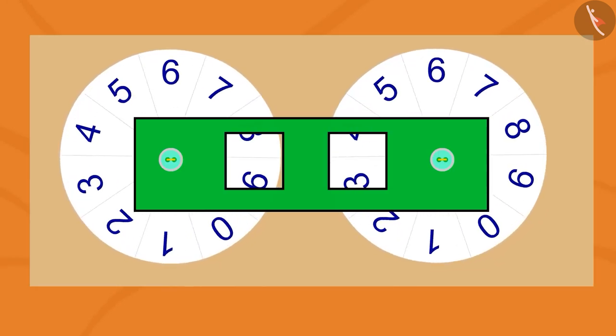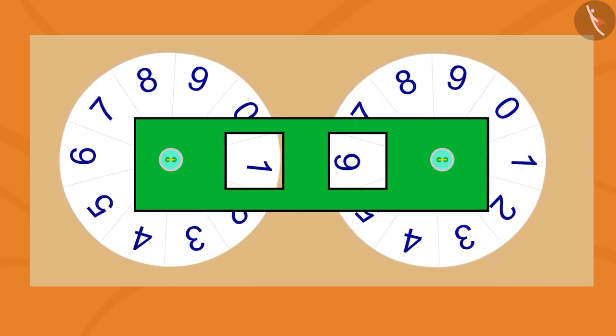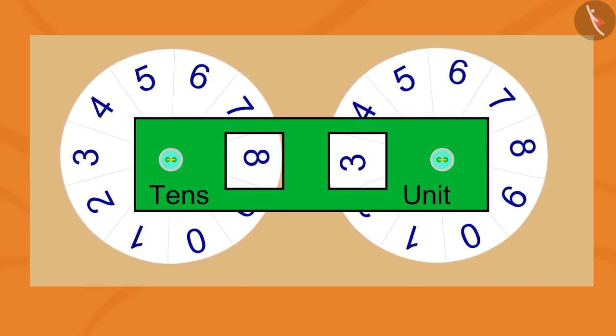These two are spinning like wheel. Yes, Gaffee. Now, on the strip, we have to write tens and unit.